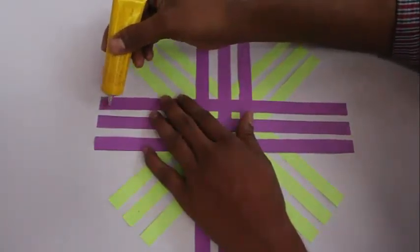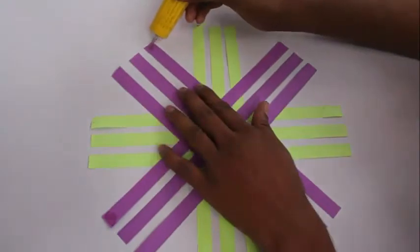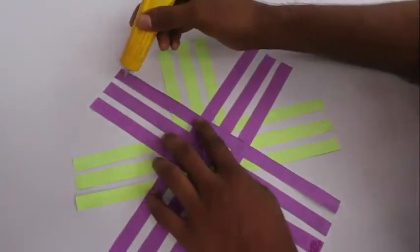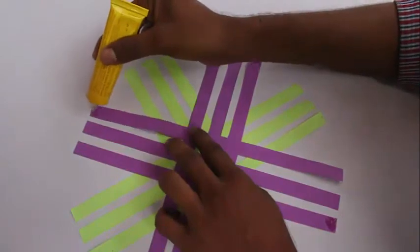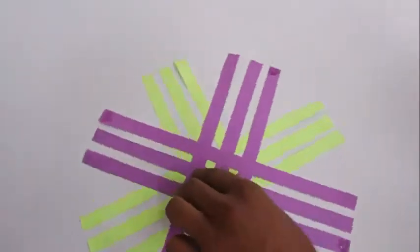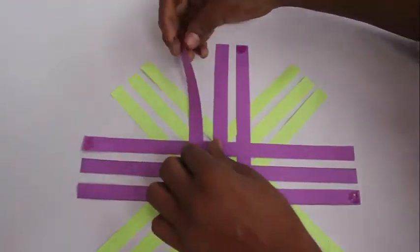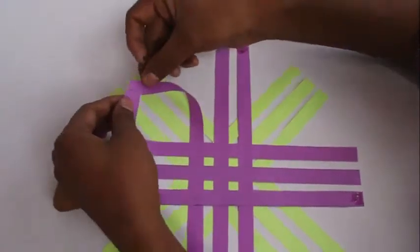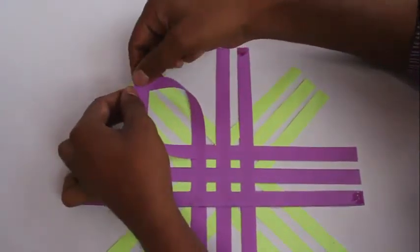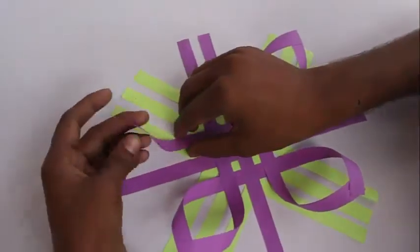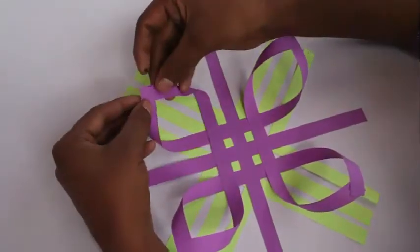Upturn the model and on all the right top magenta strips apply a dab of glue. Now take two magenta strips and stick them to make a petal or a loop, and you have got to make four such magenta loops.